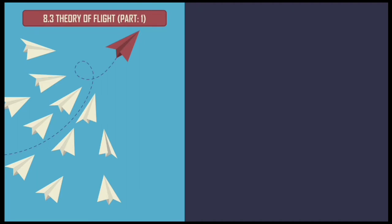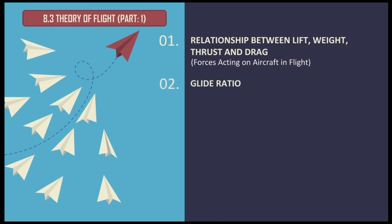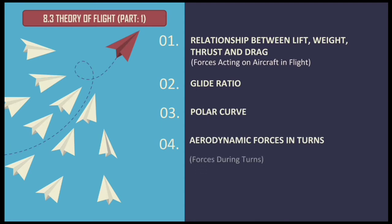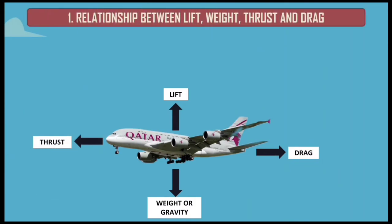We will discuss about submodule 8.3, that is Theory of Flight Part 1. Our first topic is the relationship between lift, weight, thrust, and drag. Second topic is glide ratio. Third topic is polar curve. Fourth topic is aerodynamic forces and turns. Fifth topic is stalls. Watch it till the end to understand it better and ask your doubts in the comments section.